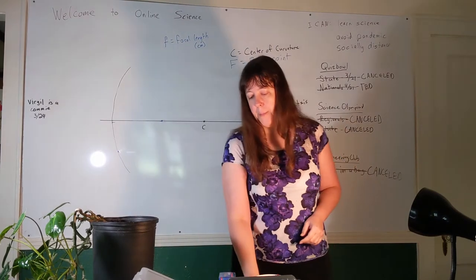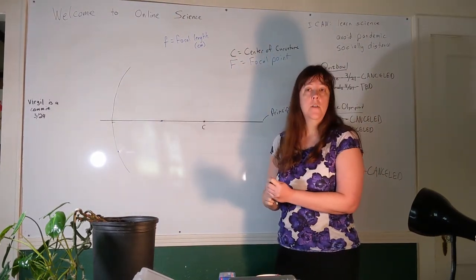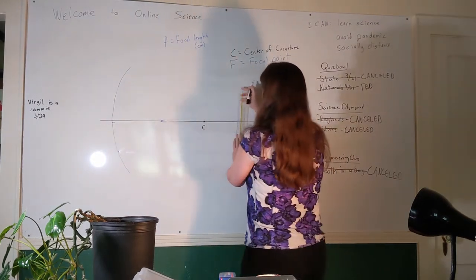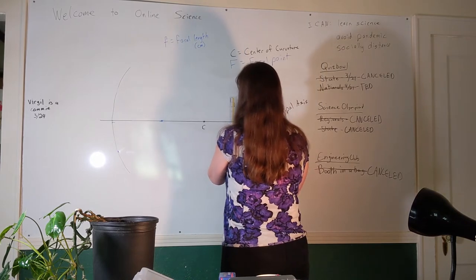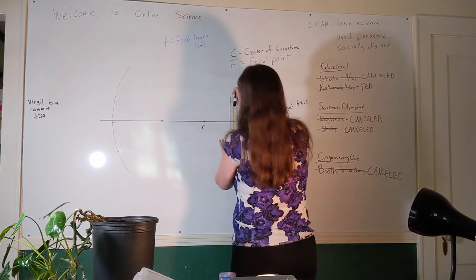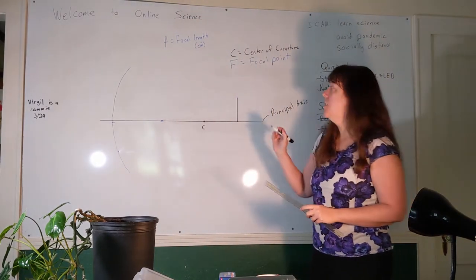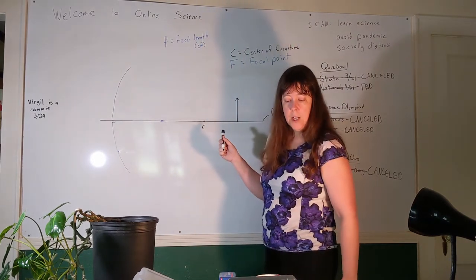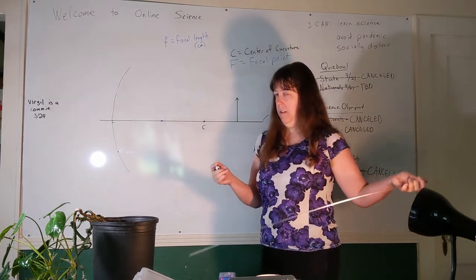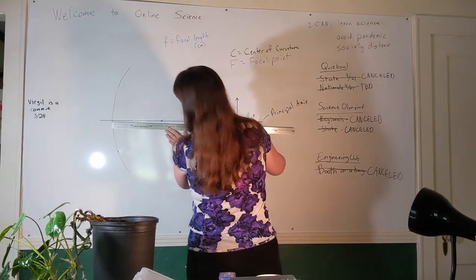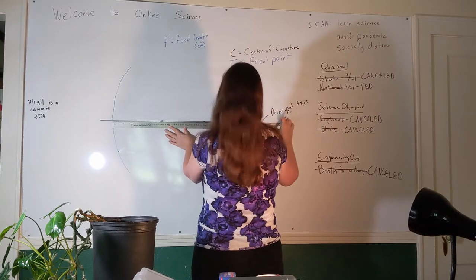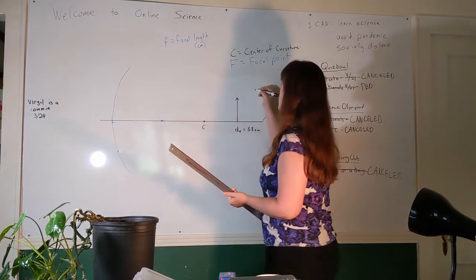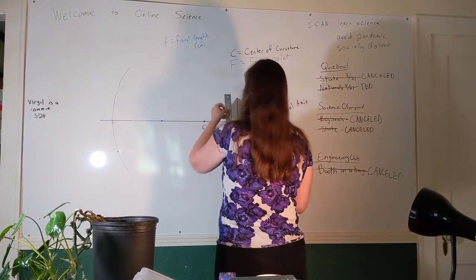So when we figure out what the properties of an image are, we're going to start by drawing an object — because the mirror has to create an image of an object. The object we're going to draw is going to be an arrow. We can measure the properties of this image, and we're going to need them on Wednesday when we start doing calculations. The properties are the same ones we defined for the plane mirror. We have the distance to the object — here my DO is about 68 centimeters — and the height of my object, which is 13 centimeters.